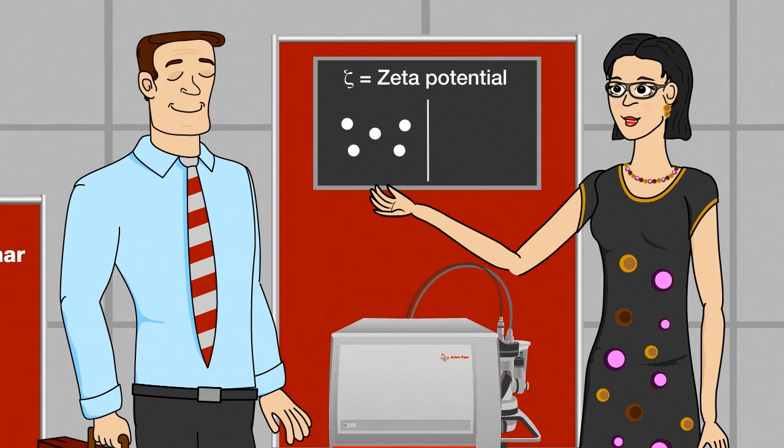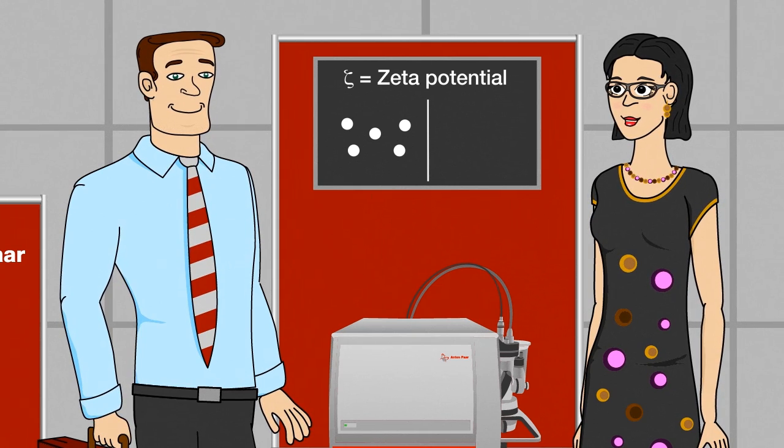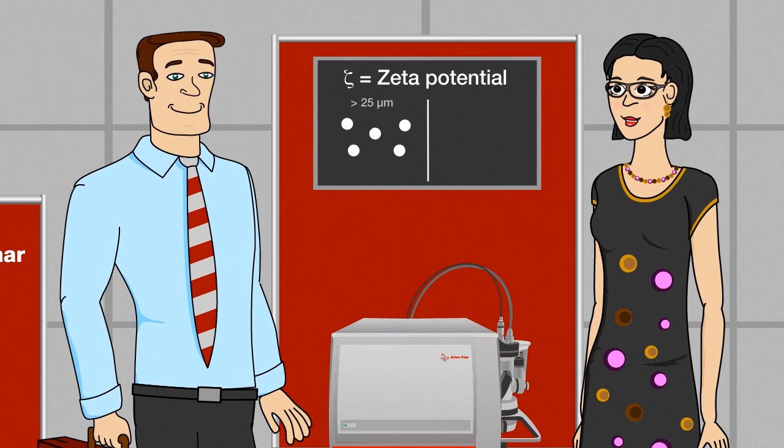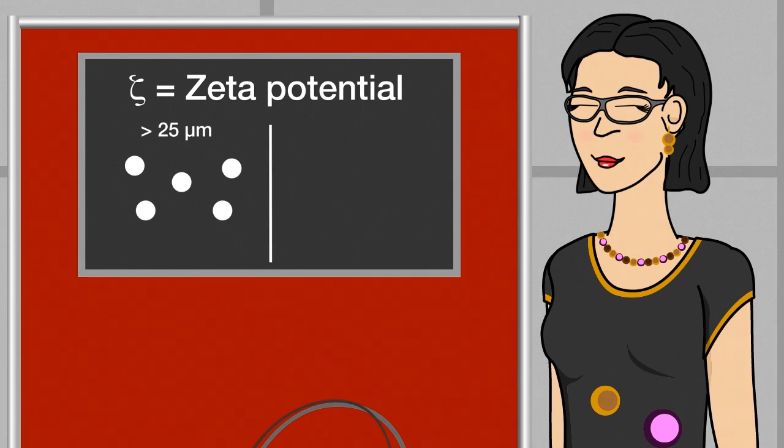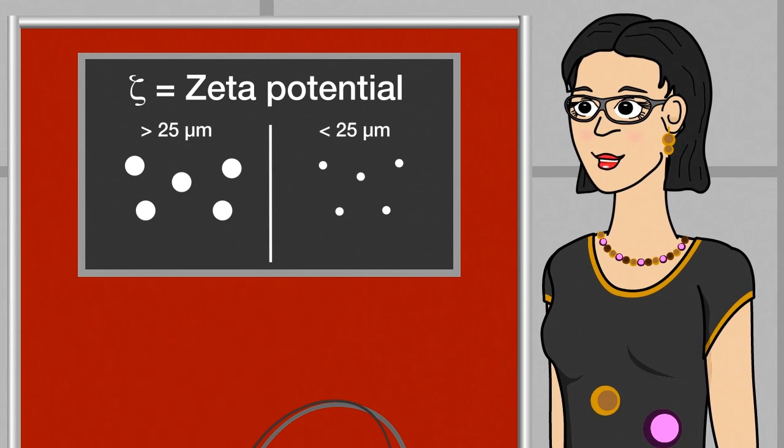Imagine two different groups of samples. Here we have macroscopic solids of any shape, like plates, foils, fibers, granulates, or powders with particles larger than 25 micrometers. And here we have particles which are smaller than 25 micrometers.